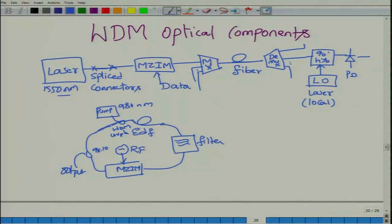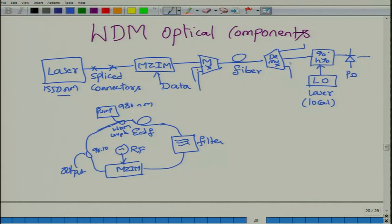Most WDM components are mass-produced and available in the C band. To connect one optical component with another we use fibers and then splice them together. Splicing means fusing two fibers so that light passes from one to the other — it gives lower loss and is much more popular. After the data has modulated the optical carrier via the Mach-Zehnder interferometric modulator, it will be multiplexed along with multiple other channels.